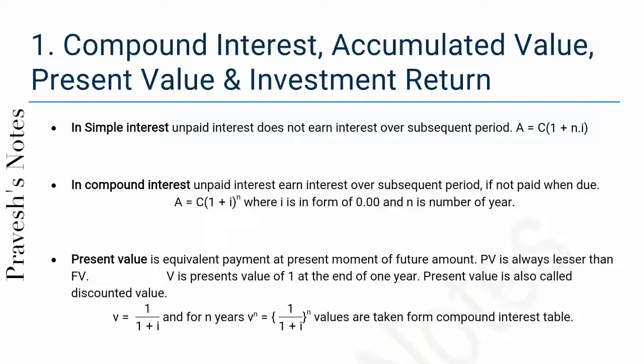v = 1/(1 + i), and for n years v^n = 1/(1 + i)^n. Values are taken from compound interest table.